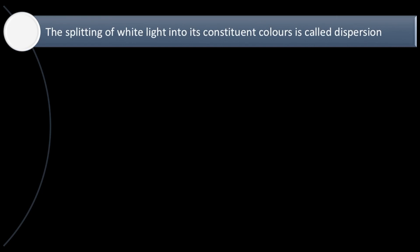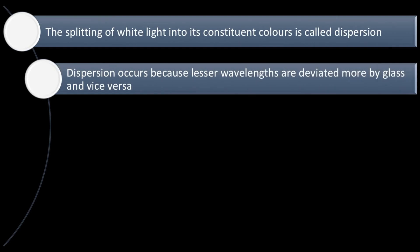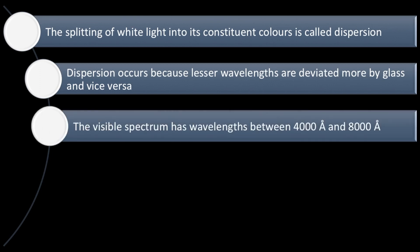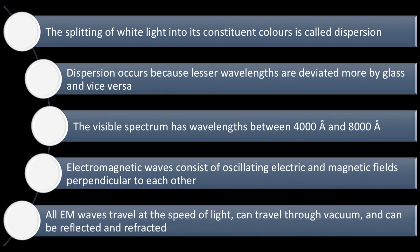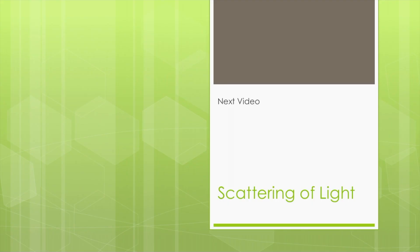Here's the summary of this video. The splitting of white light into its constituent colors is called dispersion. Dispersion occurs because lesser wavelengths are deviated more by glass and higher wavelengths are deviated less. The visible spectrum has wavelengths between 4000 angstroms and 8000 angstroms. Electromagnetic waves consist of oscillating electric and magnetic fields perpendicular to each other. All electromagnetic waves share common properties: they travel at the speed of light, through vacuum, and can be reflected and refracted. In the next video, we will be talking about scattering of light.